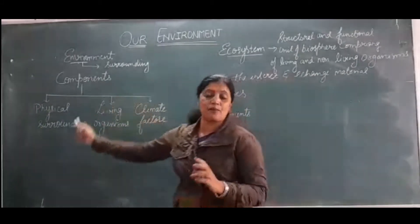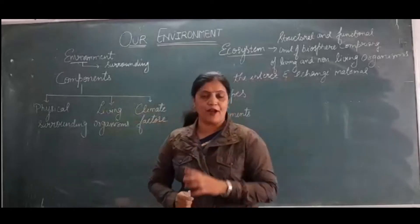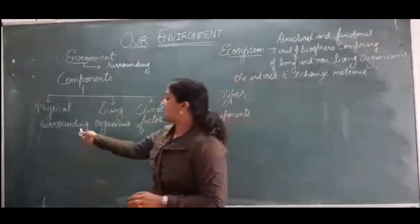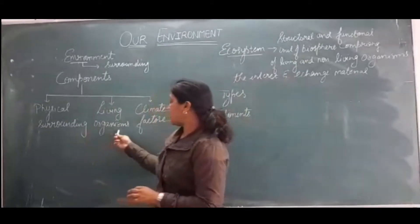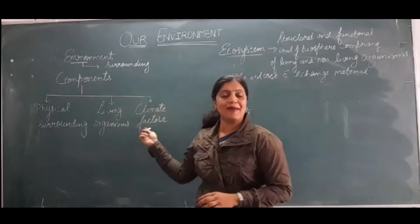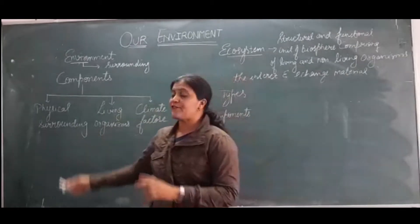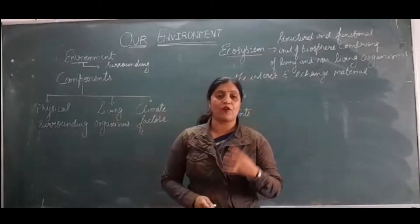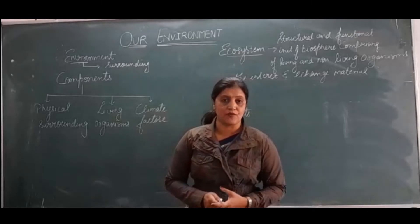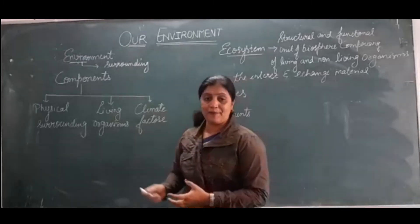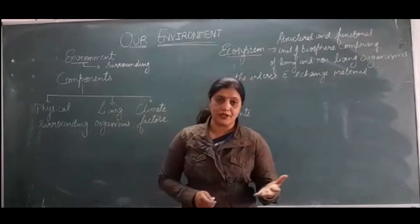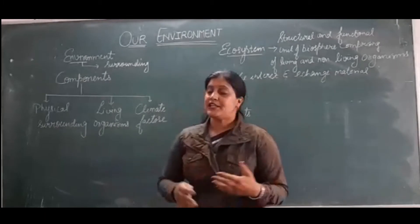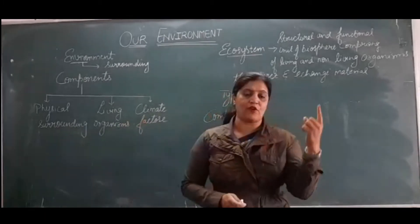If we look at the components of environment, there are three major components: physical surroundings, living organisms, and climatic factors. When we look in our surroundings, the physical things present in our environment are like air, water, and land. These all are the physical surroundings.